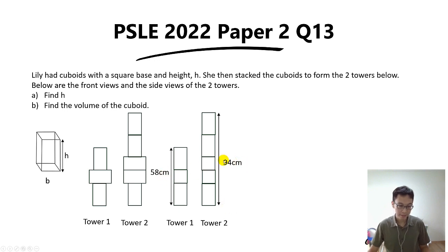Using this information, how do we find h and the volume of the cuboid? The concept here is units and parts. How do you know this is a units and parts question? Because it involves two unknowns: the height and the breadth of the square.